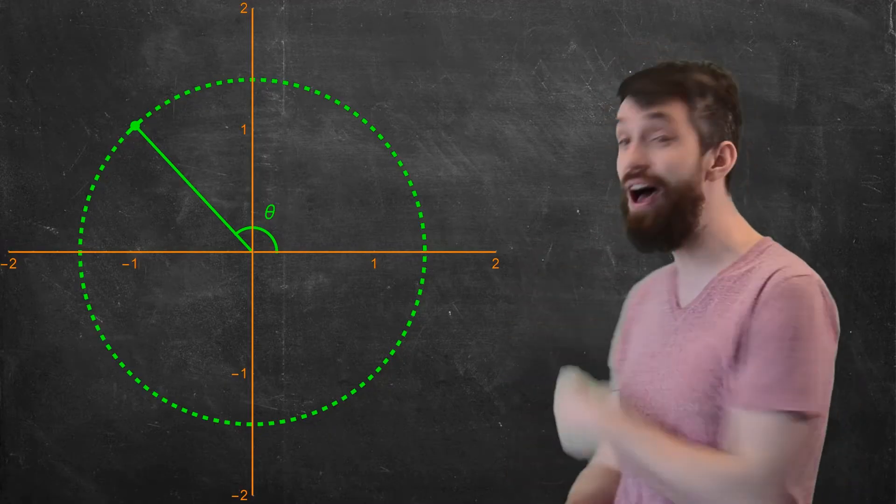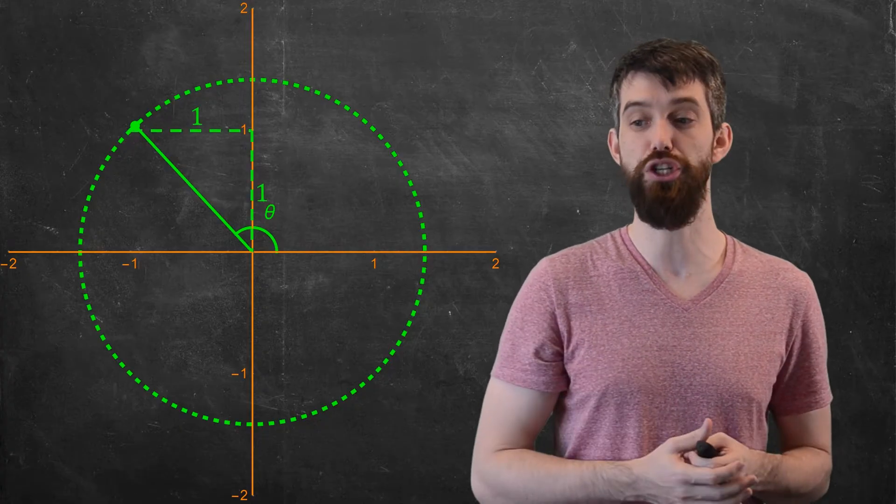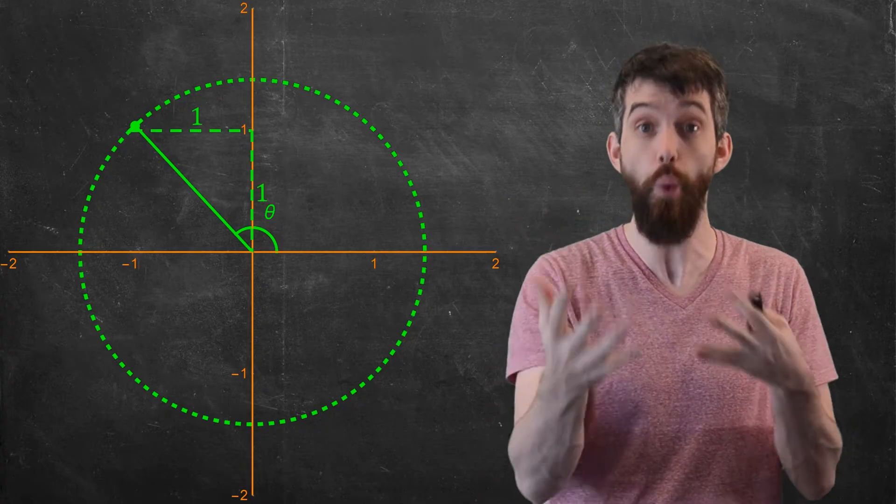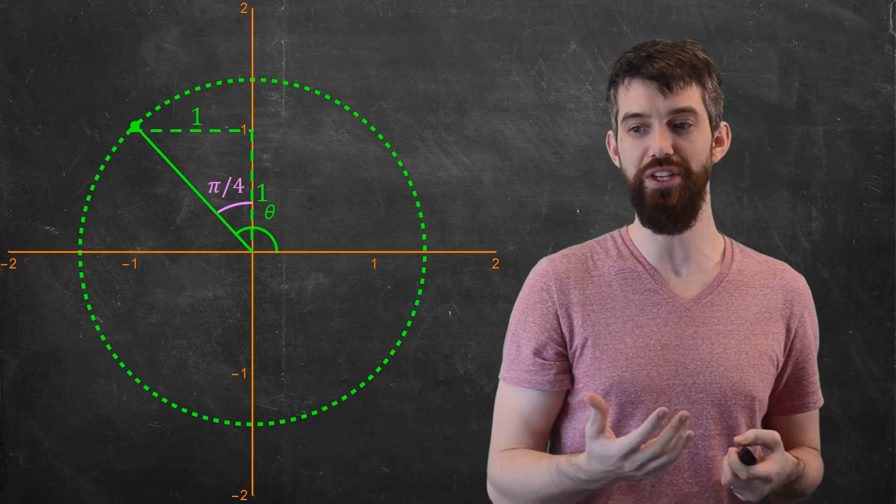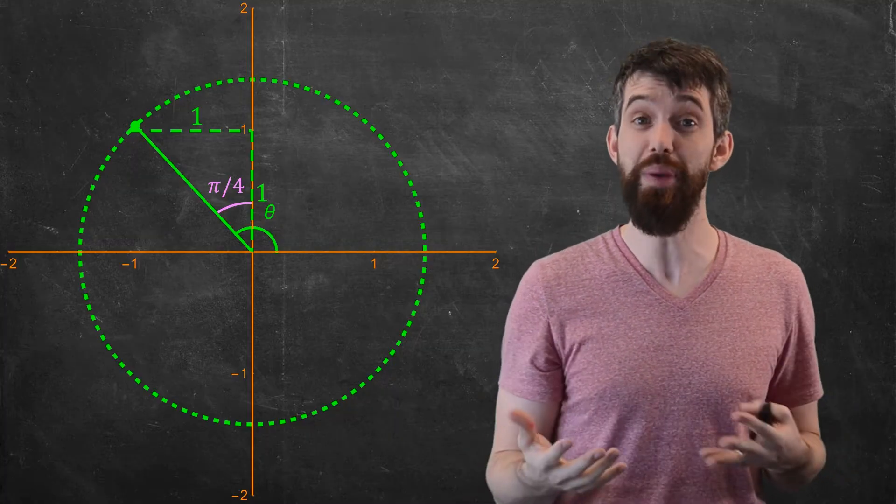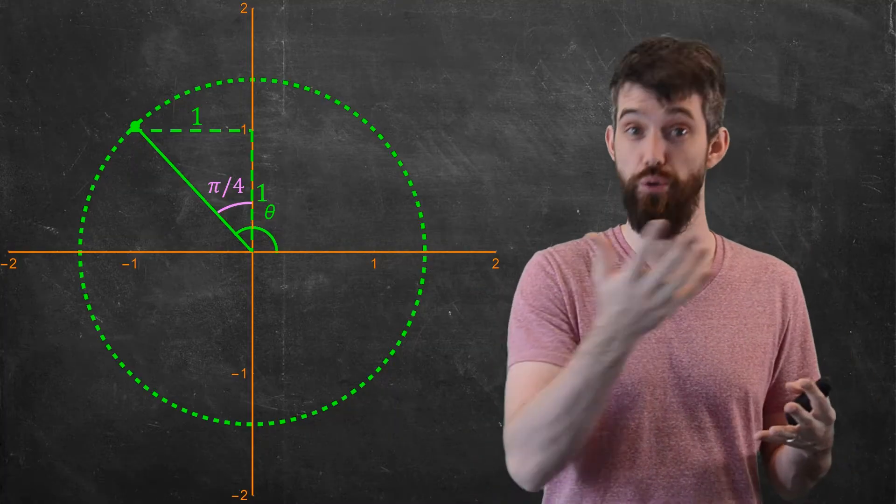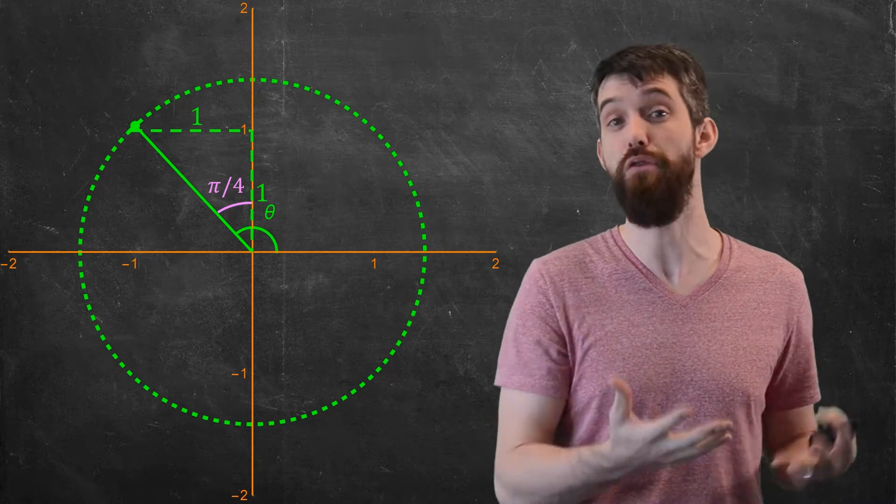What is this value theta in this specific case? It actually breaks up into two different things. Remember it was this 1-1-√2 triangle? There's an inner angle, which is just this portion here inside of the triangle, which is π/4. I know that because the 1-1-√2 triangle has an inner angle of π/4.